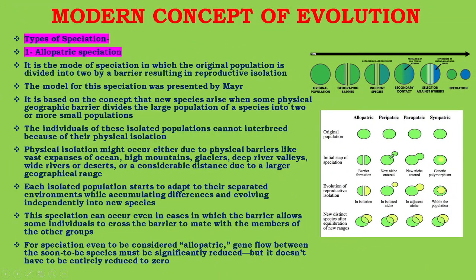There are four types of speciation: allopatric, peripatric, parapatric, and sympatric. Allopatric speciation is the mode of speciation in which the original population is divided into two by a barrier. You can see in the diagram: there is a geographic barrier that divides the original species into two. Low-fitness hybrids form upon secondary contact, then there is selection against hybrids, divergence of mating-associated traits, and finally speciation takes place. This model was presented by Mayr.